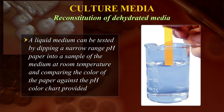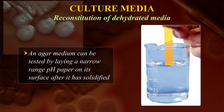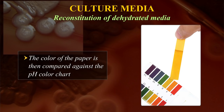A liquid medium can be tested by dipping a narrow range pH paper into a sample of the medium at room temperature and comparing the colour of the paper against the pH colour chart provided. An agar medium can be tested by laying a narrow range pH paper on its surface after it has solidified. The colour of the paper is then compared against the pH colour chart.